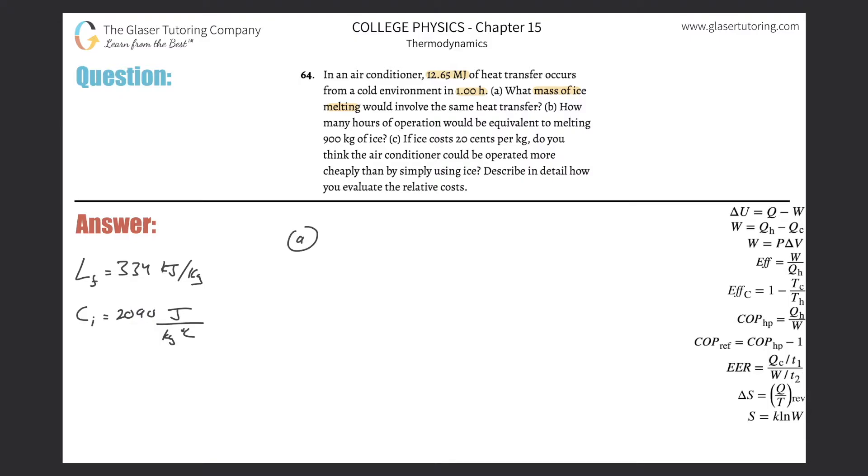Alright, so letter A, we're talking about ice melting. This goes back to basically chapter 14. We know that the energy required to melt an object will be equal to the mass of the object that has melted multiplied by the latent heat of fusion.